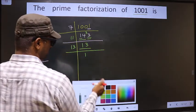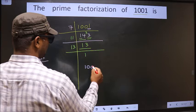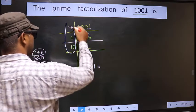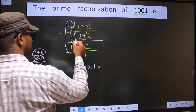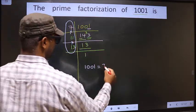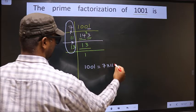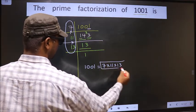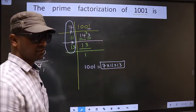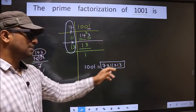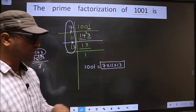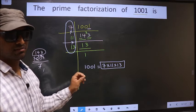So the prime factorization of 1001 is the product of these numbers — that is 7 into 11 into 13. This is the prime factorization of 1001, also called the product of prime numbers of 1001.